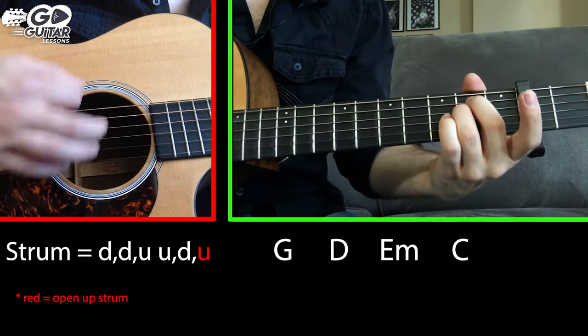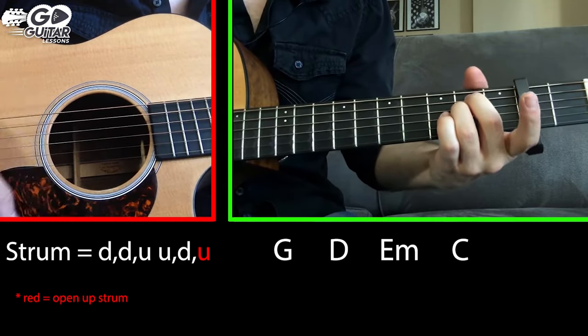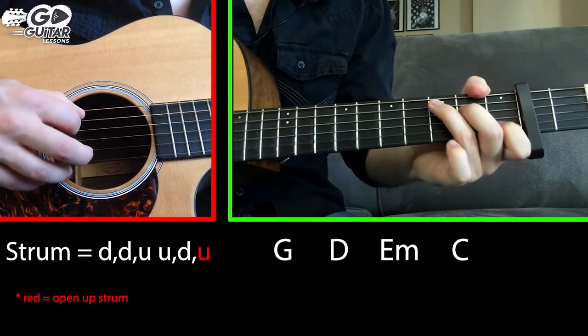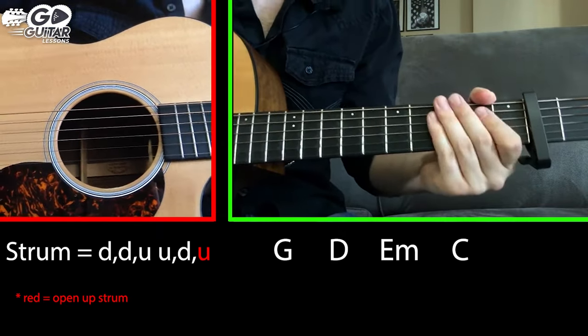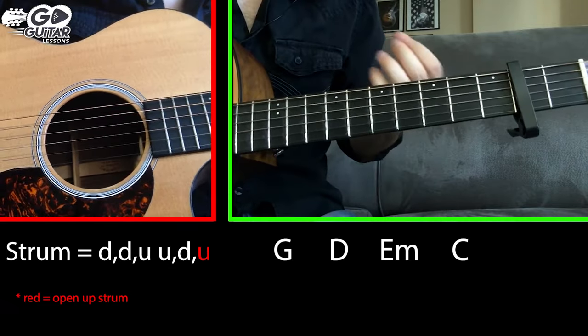E minor chord. Down, down, up, up, down, up. C chord. Down, down, up, up, down, up. That's our first progression.